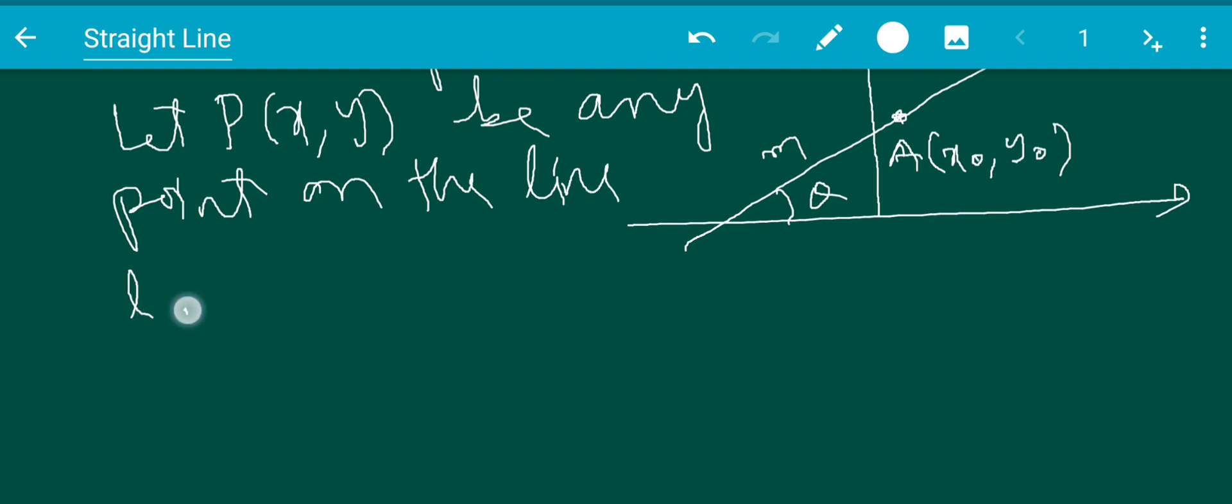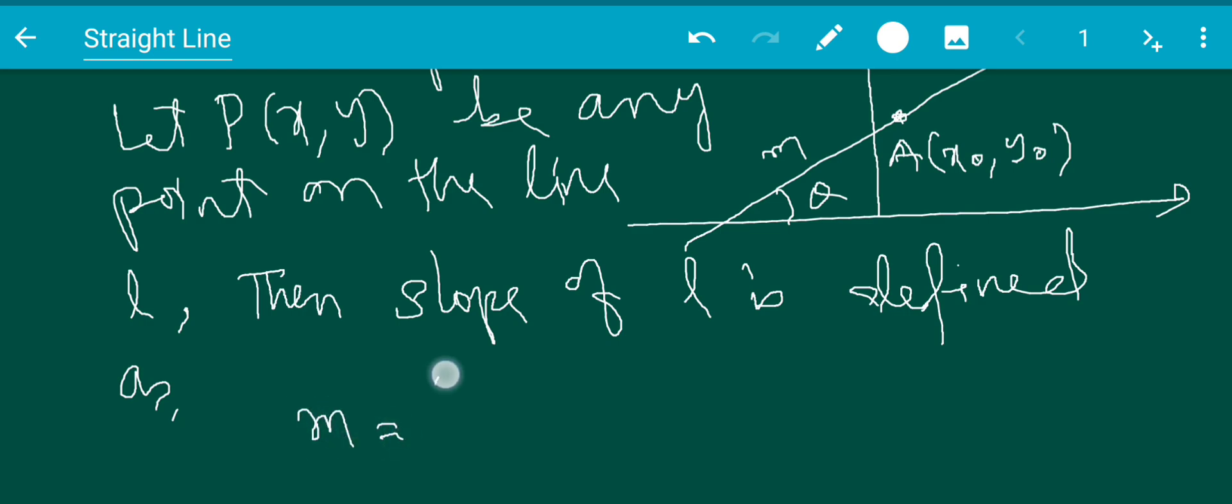Then slope of l is defined as m = (y - y₀)/(x - x₀).